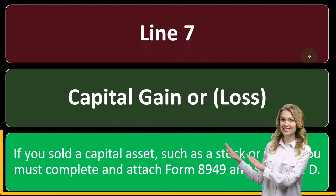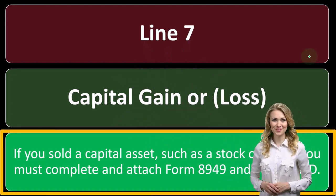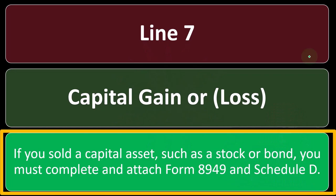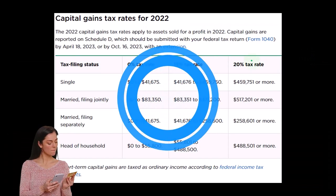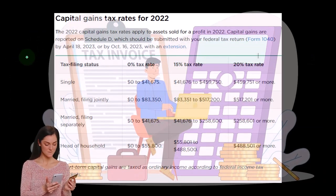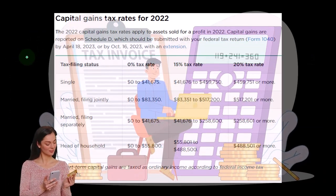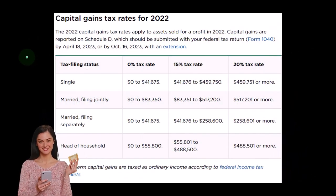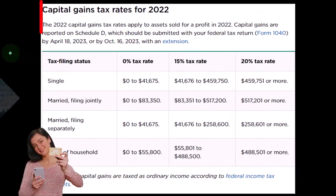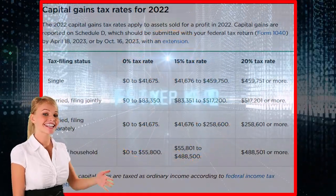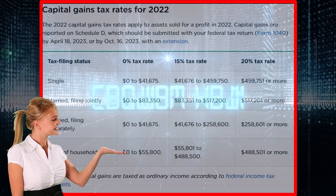If you sold a capital asset such as a stock or bond, you must complete and attach Form 8949 and Schedule D. Remember that we have a progressive tax system with normal or ordinary tax rates, and the capital gains rates might have a beneficial rate if you qualify by having long-term capital gains as opposed to short-term capital gains.